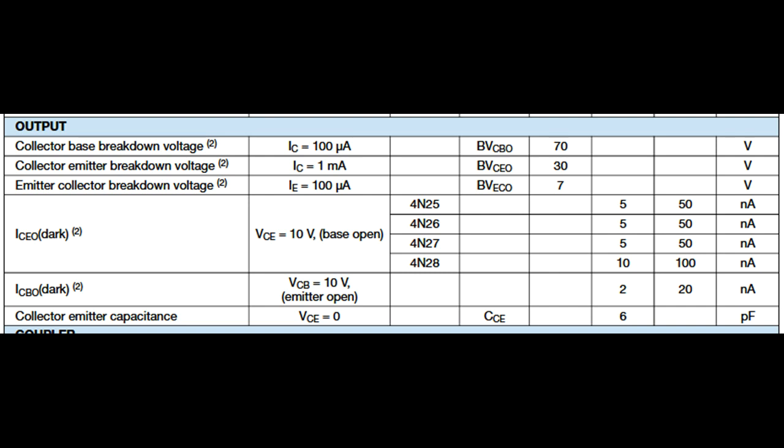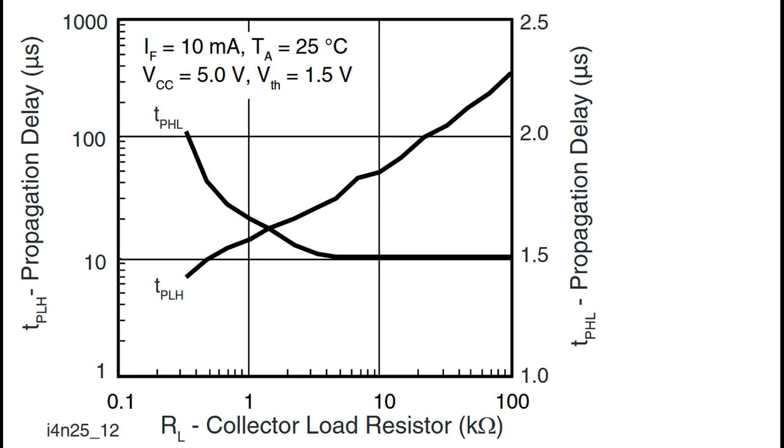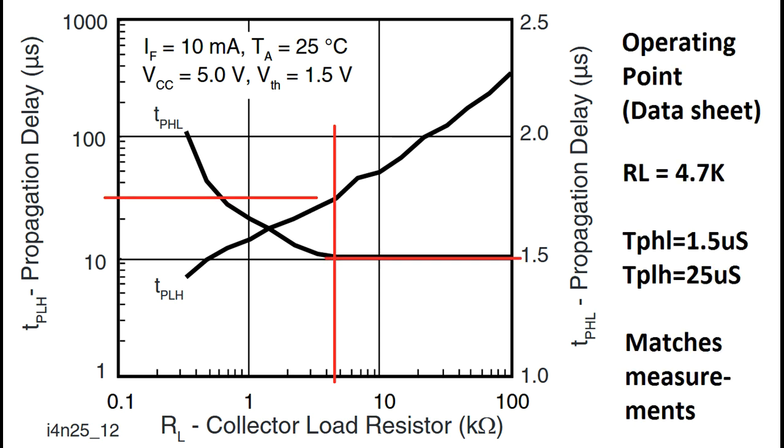The characteristics of the output transistor listed here, none of them are particularly important to this particular test we're doing. The data sheet includes a table which lists the low to high and high to low propagation values. Plotting in our 4.7 K ohm collector load resistor gives a table value of 1.5 microseconds for the prop from high to low and 25 microseconds in the other direction, and this very closely matches what we measured earlier.